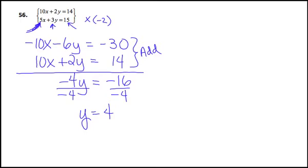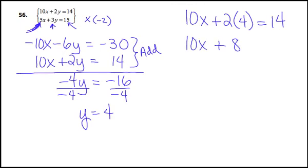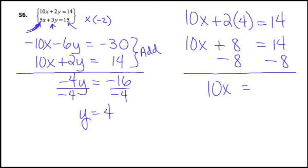I need to take that answer for Y and plug it into one of the two original equations. I think I'm going to go with the first equation because I like dividing by 10. I'm going to be solving for X. And so 2 times Y, but Y is 4, equals 14. And then I've just got to do my arithmetic over here. And remember, before you divide by 10, you have to get rid of this 8. And so I have 10X equals 6. And then now I'm going to divide both sides by 10.